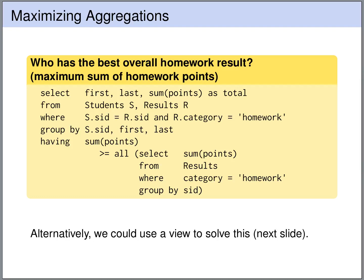Looking at this query, there is a lot of redundancy: we are doing similar things twice. In the outer query we output the names of the students with the sum of their homework points, and in the inner query we also compute the sum of homework points for each student. The question is whether we can remove some of this redundancy and write this more elegantly. One possibility to make this more compact is to use views.